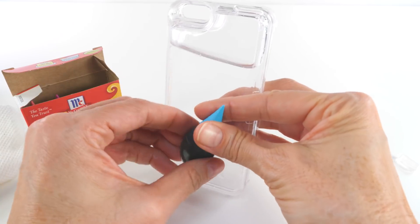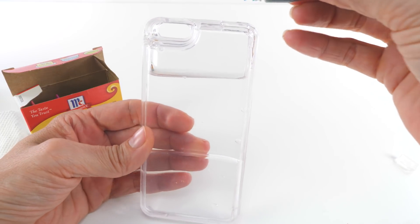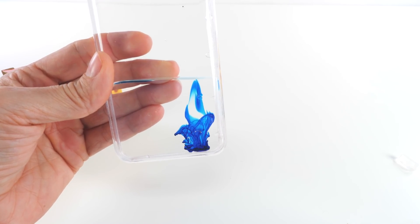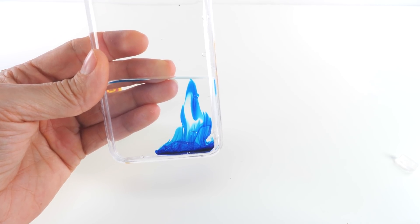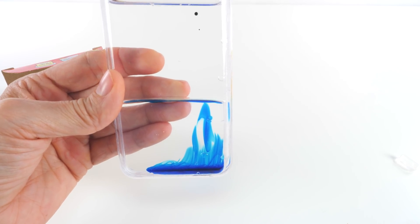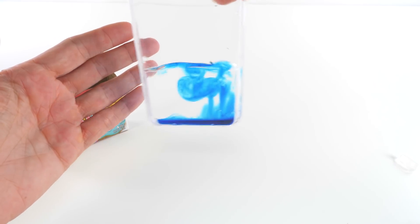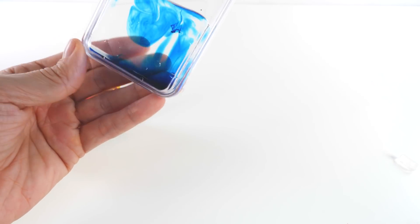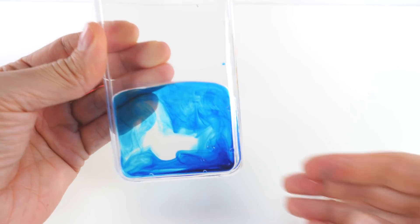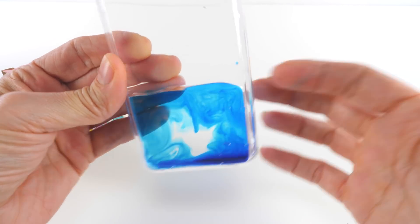I have some food coloring, we'll add this next. This should look really neat. Let's kind of swirl it around. They don't have the top on yet so I can't get too crazy. Now as you can see, the food coloring is mixing with the water but not with the oil. Isn't that neat?